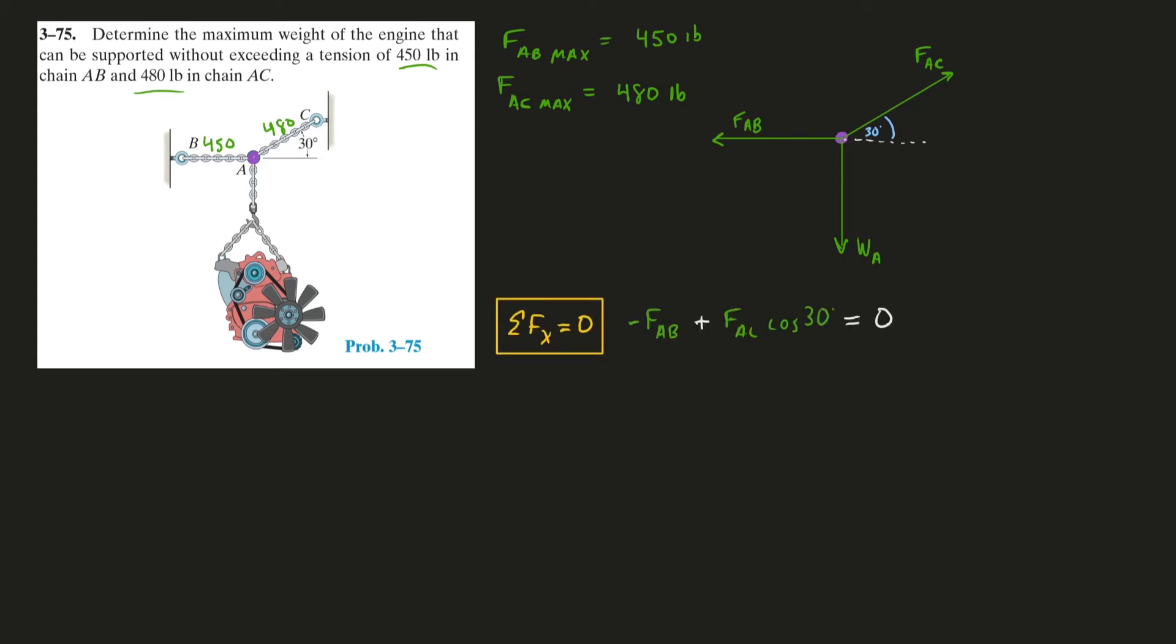So in our sum forces X, we have AB only going in the negative X, and we have this horizontal component of AC going in the positive X.